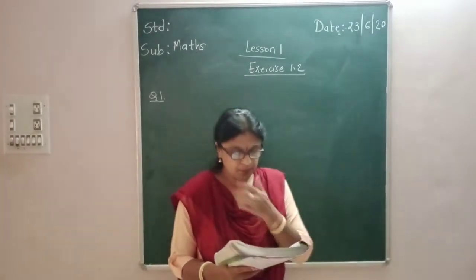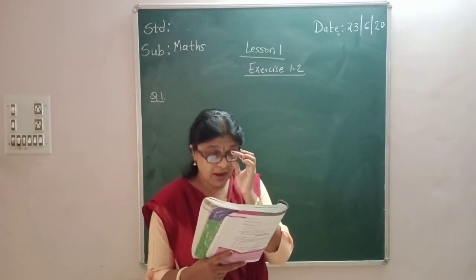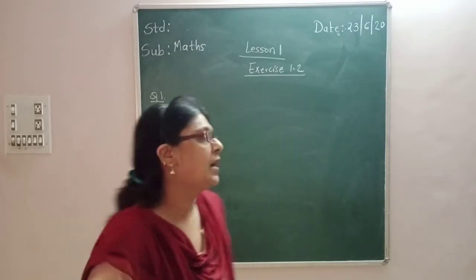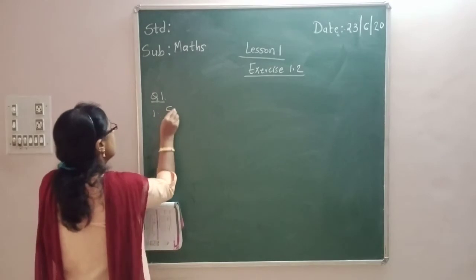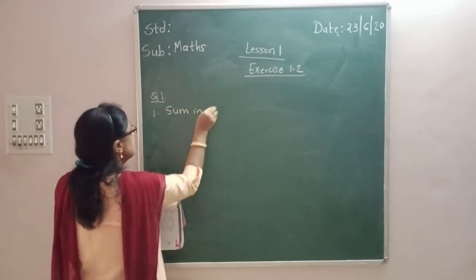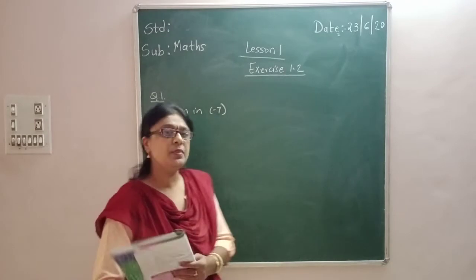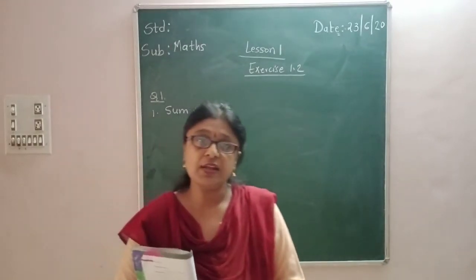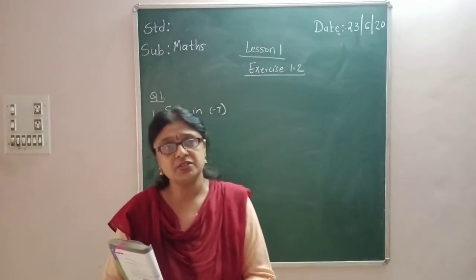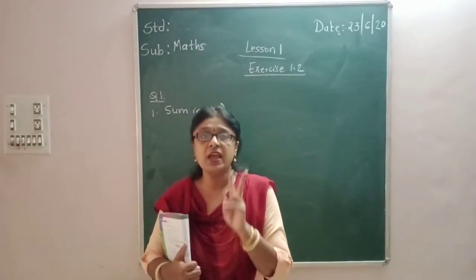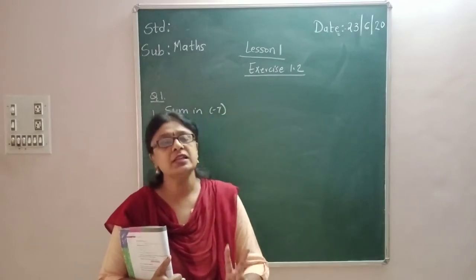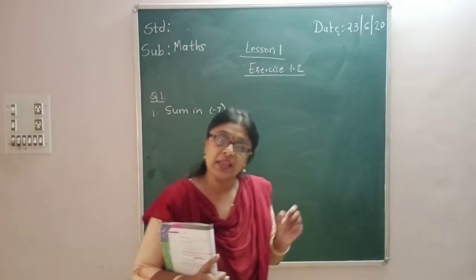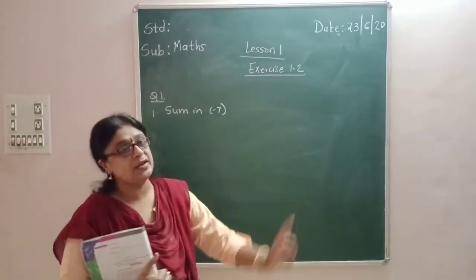The first one is: write down a pair of integers whose sum is minus 7. Sum means addition. So we have to write a pair of integers — we have to select two integers in such a way that when we add those two integers we get the answer as minus 7.